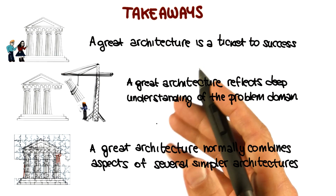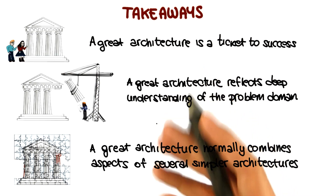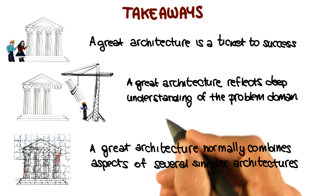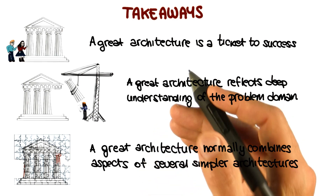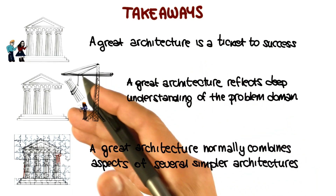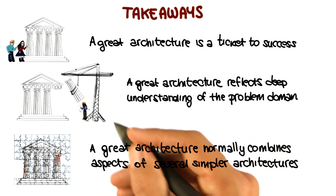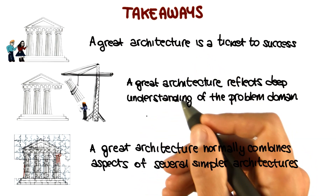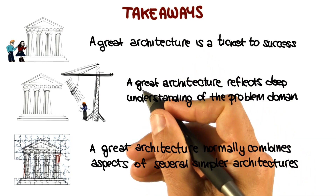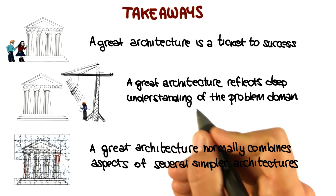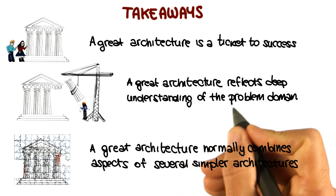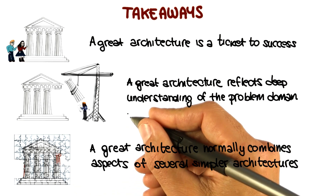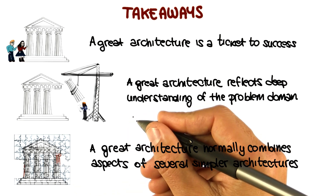An effective engineer should, first of all, know what is out there — know the solution space. Second, an engineer should understand what has worked well and what has failed miserably in similar occasions in the past. And finally, an effective engineer should be able to suitably combine existing solutions appropriately to come up with an effective overall solution for the specific problem at hand. This is just as true in the context of software architectures.